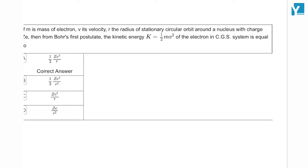If m is mass of electron, v its velocity, r the radius of stationary circular orbit around a nucleus with charge Ze, then from Bohr's first postulate, the kinetic energy of the electron in CGS system is equal to...